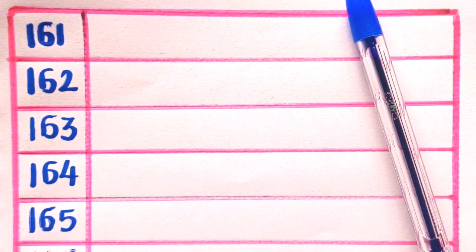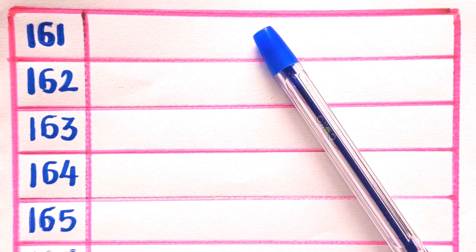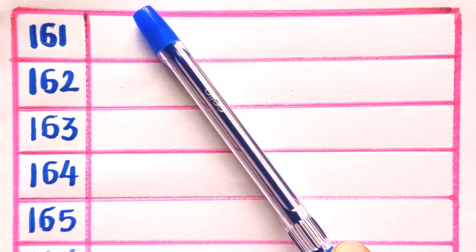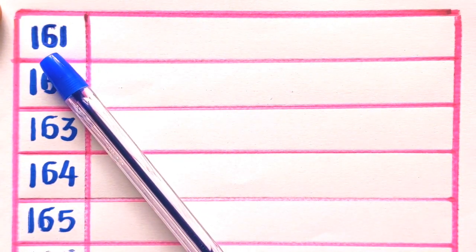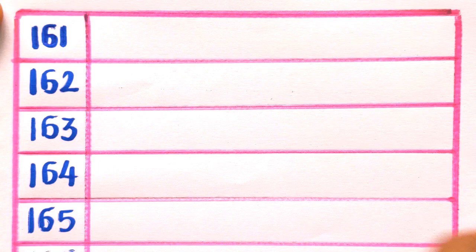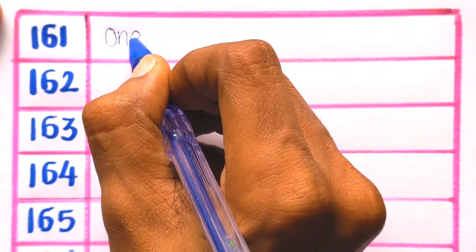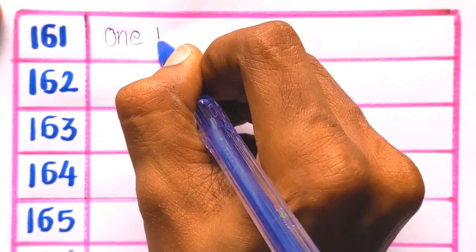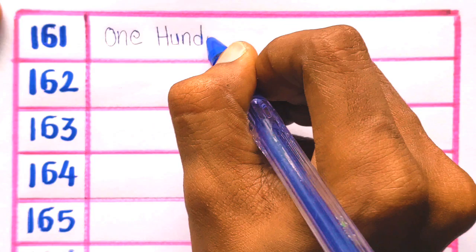Hey hello children, welcome back to my channel. Today's class we are going to write number names from 161 to 170. So let's get started. At first, 161 is ONE HUNDRED SIXTY ONE.